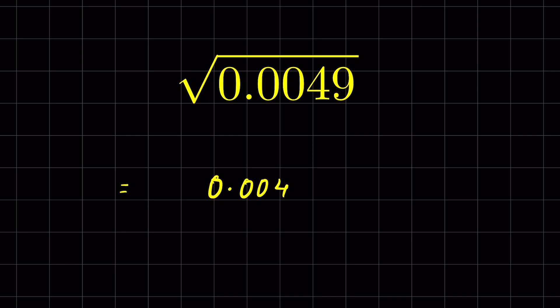So 0.0049. To convert it into a fraction, we remove the decimal and write 1 in the denominator first, and then we count the digits after decimal. So there are 1, 2, 3, 4 digits after decimal. So we write 4 zeros in the denominator.